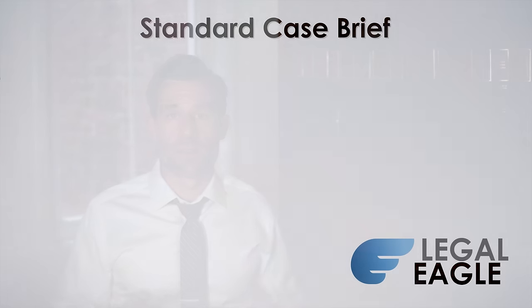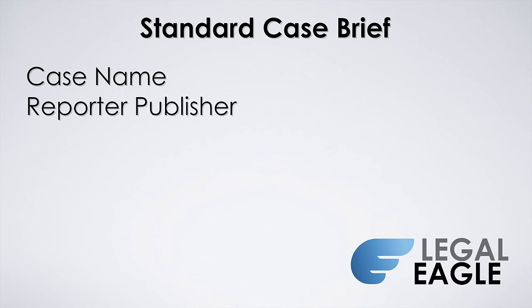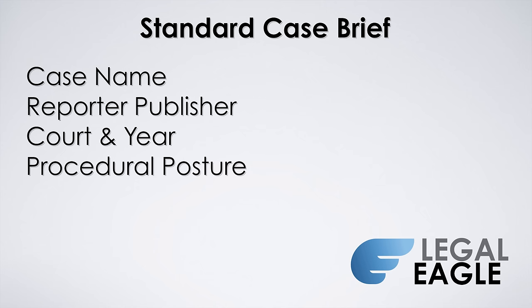Standard advice says that your case brief should start with the case citation. You should have the name of both parties, which is usually something like Jones versus Smith. It should include the publisher of the particular case, the reporter that the case can be found in, the court that issued the decision, the year that the opinion was published, and the procedural posture of the case — meaning how it got to the court of appeal.